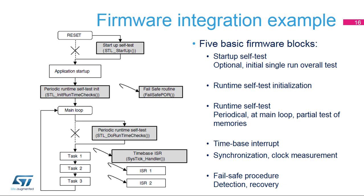The memory areas are tested step-by-step per parts within the task, synchronized by time-based ticks derived from timer interrupts. The interval required to complete the test depends mainly on the size of the memory areas under test, frequency of the task calls, and sizes of the blocks tested in a single step. Optionally, a one-time initial startup overall self-test can be additionally implemented at power-on or after application reset. Whenever a malfunction or discrepancy is found during these tests, the fail-safe routine is called. It should put the application into safe state and determine the next recovery possibilities.